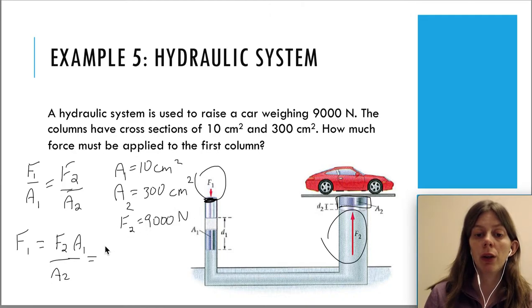If we plug in the numbers with units this time just to see what happens, A1 is 10 cm squared and A2 here is 300 cm squared.